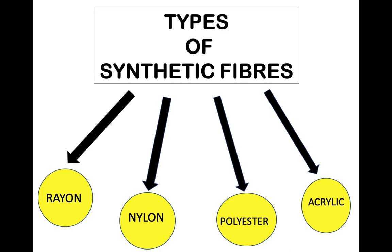There are mainly four types of synthetic fibers: rayon, nylon, polyester, and acrylic.